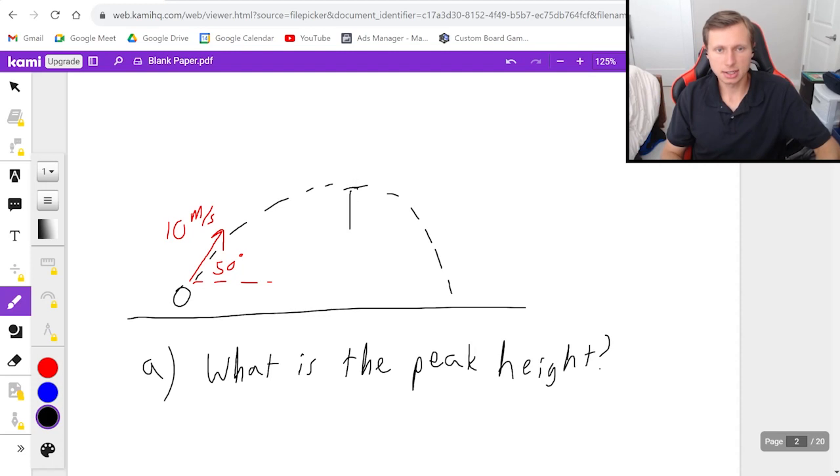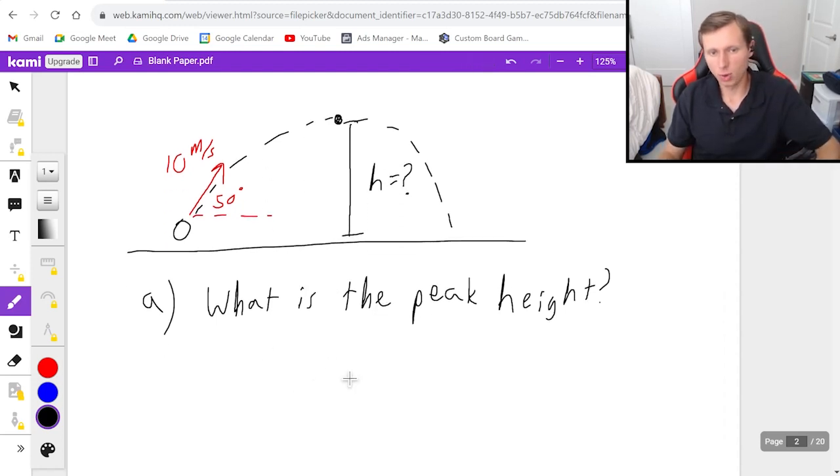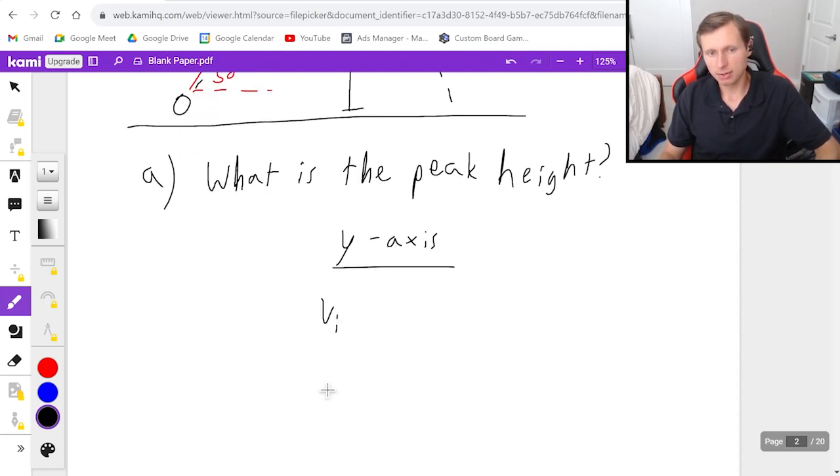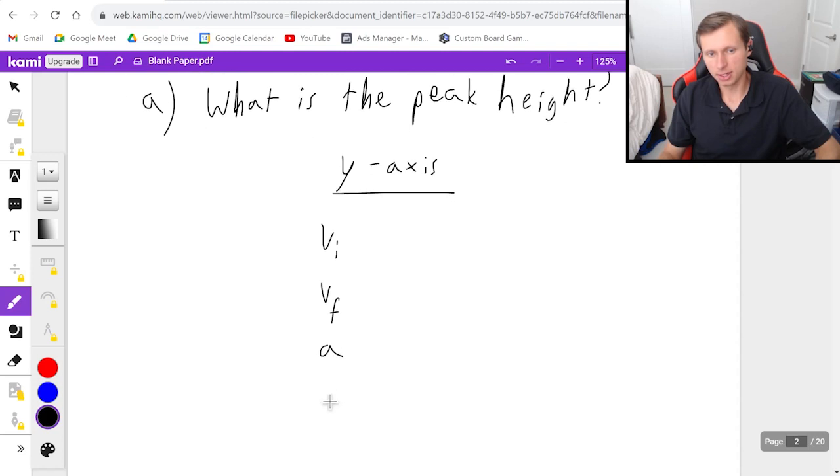So in other words, that's this height right here, when the ball is at its peak. And to find that, you'll notice that we're talking about the y-axis. So I'm going to start with the y-axis for this problem. So for that, I'm going to write out v initial, v final, acceleration, time, and displacement.